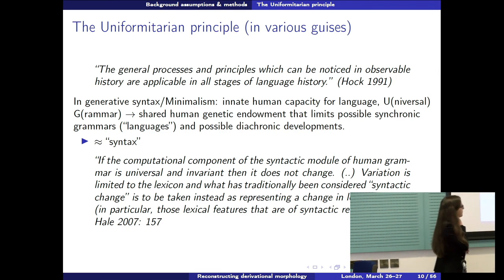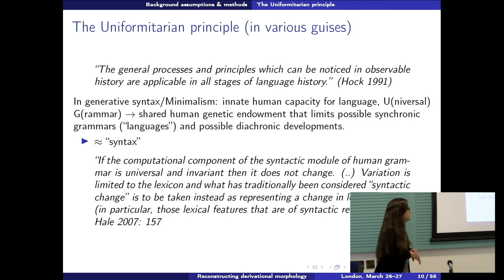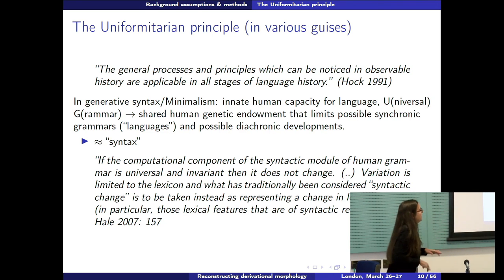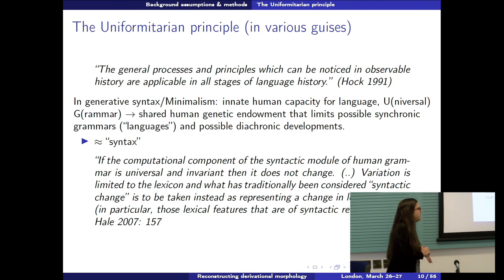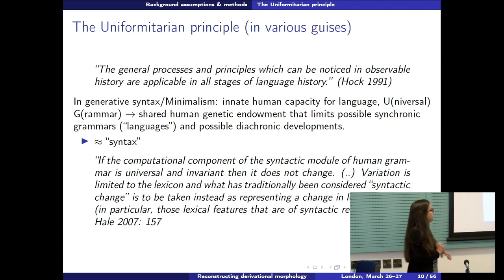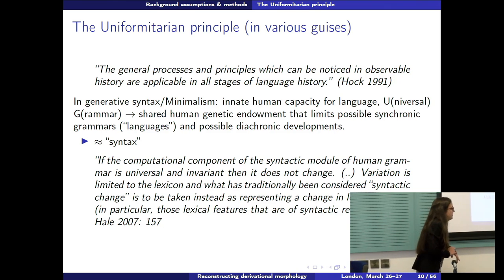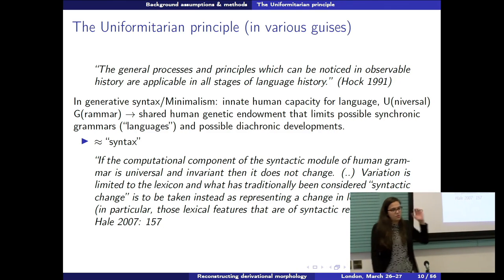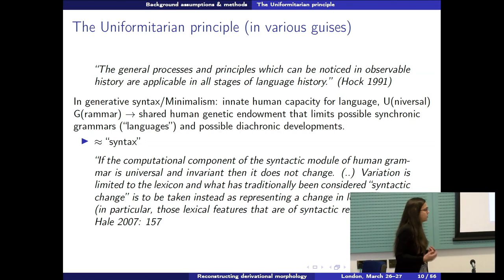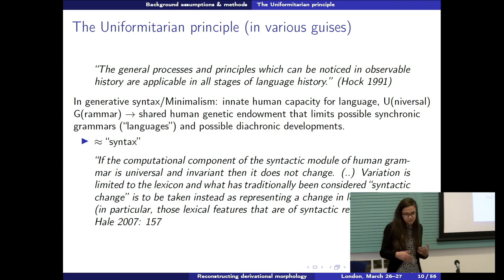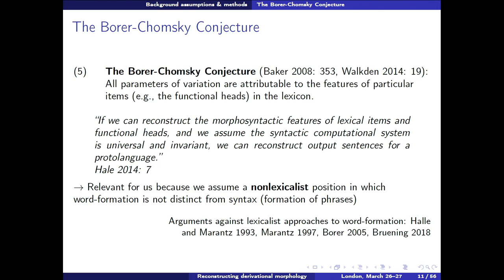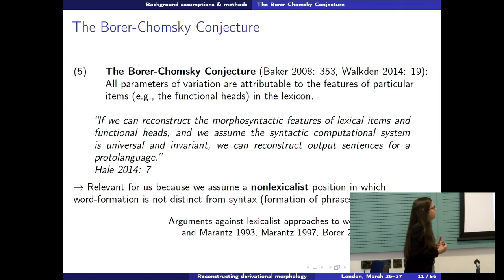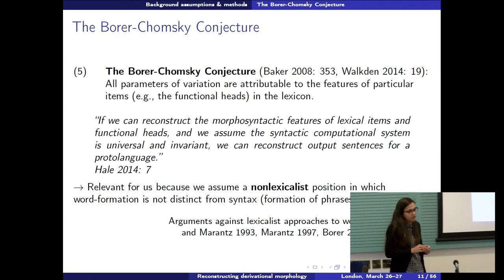Hale says the computational component of the syntactic module of human grammar is universal and invariant; variation is limited to the lexicon, and what has traditionally been considered syntactic change represents a change in lexical features — particularly those of syntactic relevance. This applies to the morphological changes we'll examine. This is known as the Borer-Chomsky conjecture: all parameters of variation are attributable to the features of particular items or functional heads in the lexicon.